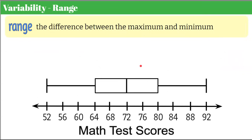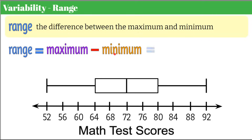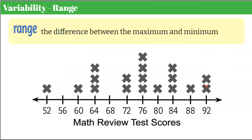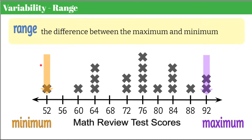Now let's talk about range — the difference between the maximum and the minimum. On our box plot, the maximum is the end of the right whisker, which is 92, and the minimum is the end of the left whisker, which is 52. Subtracting gives a range of 40 points. We can find range the same way on a dot plot: maximum 92 minus minimum 52 also gives a range of 40.